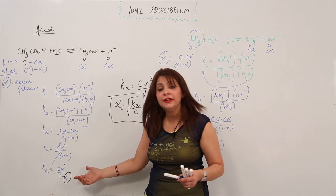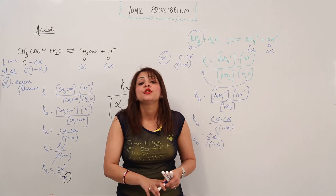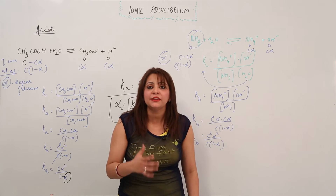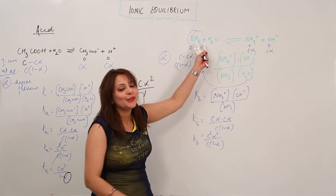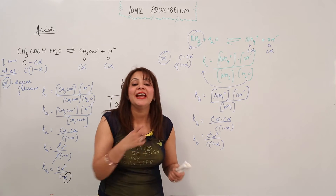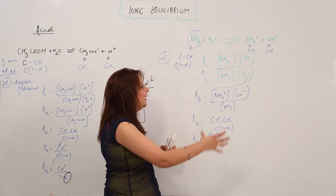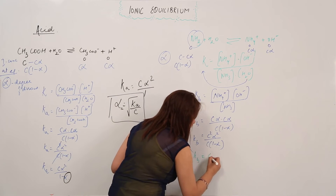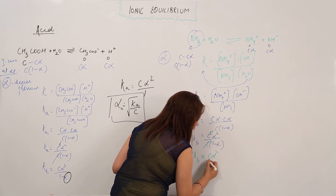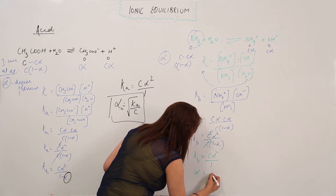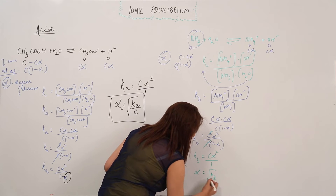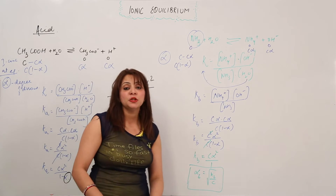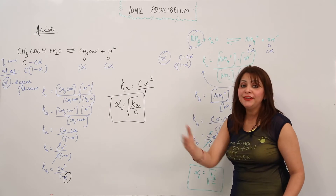Just as we neglected alpha for the weak acid, we neglect alpha in the denominator for the weak base as well, since it dissociates only to a small extent. So Kb equals C·alpha², and alpha_B equals the square root of Kb divided by C. This is the expression for the degree of dissociation of a weak base.